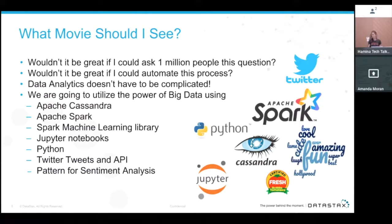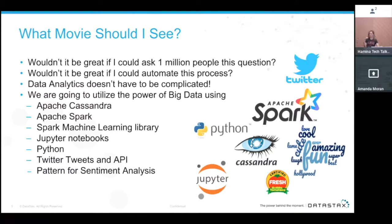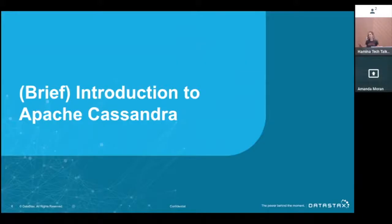Data analytics and data science doesn't have to be complicated. We're going to utilize the power of big data using Apache Cassandra, Apache Spark, the Spark machine learning libraries, Jupyter notebooks, Python, PySpark, Twitter tweets and the Twitter Dev API, and we're going to use Pattern, which is a Python package for sentiment analysis.